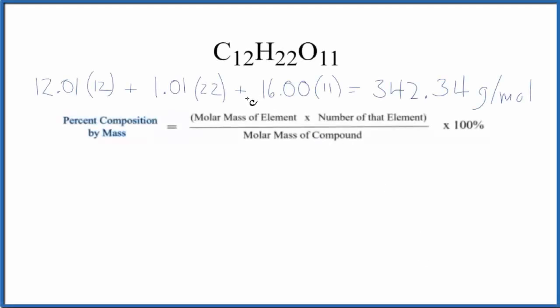In this video, we'll find the percent composition by mass for each element in C12H22O11. This is sucrose, often called just sugar. To do this, we have this formula here, and the first thing we need to find is the molar mass of the compound.